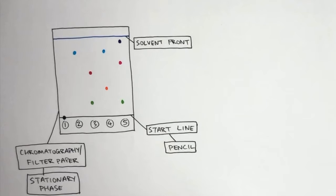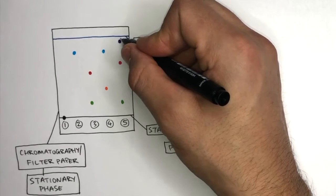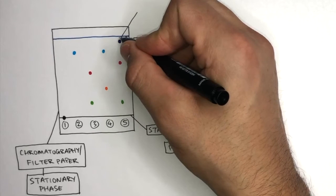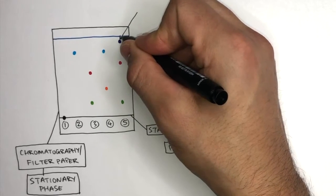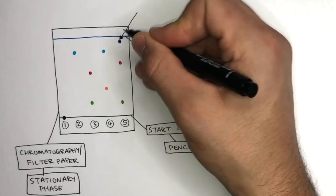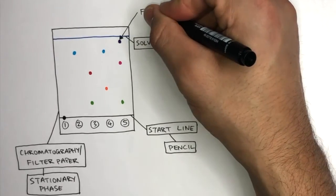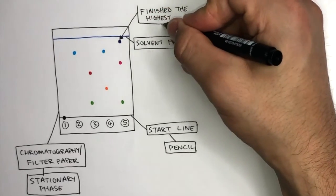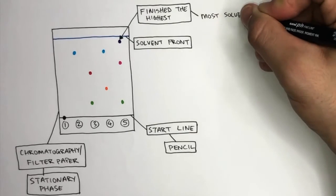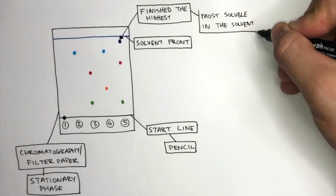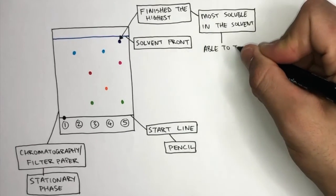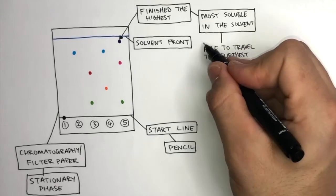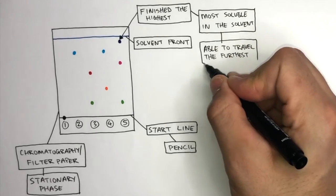Now we've identified the key parts of a chromatogram, we can now learn how to interpret these colored compounds. Chromatography works because the colored compounds dissolve in the solvent and they move up with the solvent. This colored compound has finished the highest out of all the other colored compounds as it is the most soluble in the solvent compared to all of them. This has allowed it to be able to travel the furthest compared to all the other colored compounds.